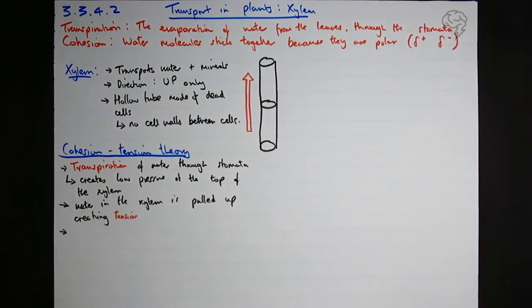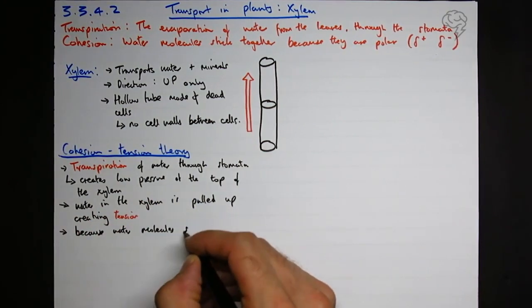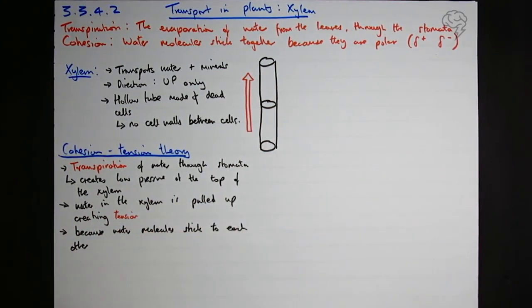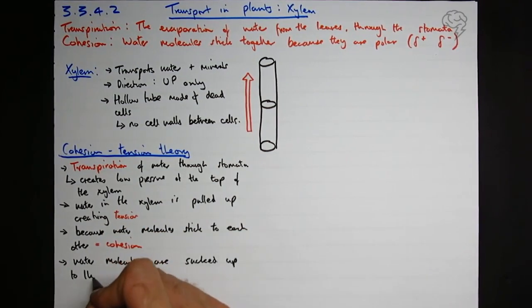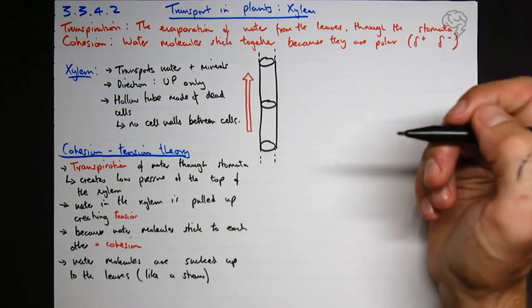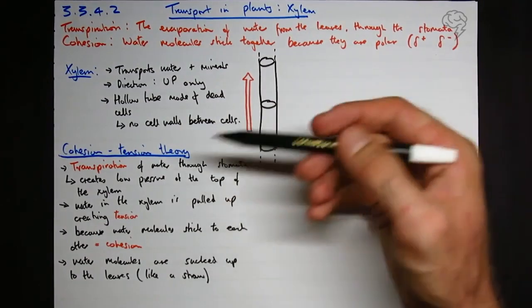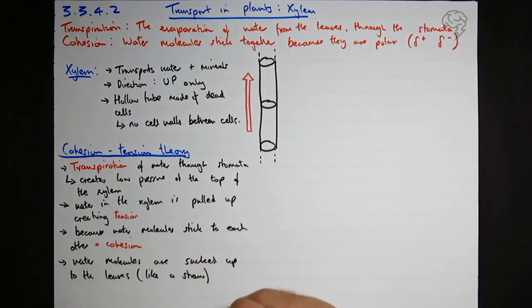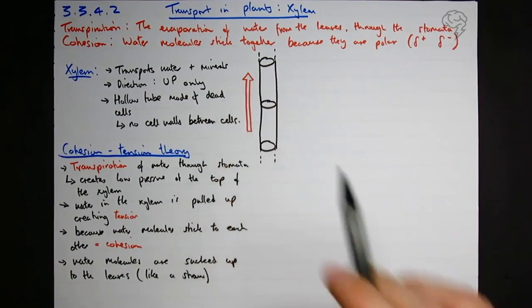If this was another liquid, and it wasn't water, water that wasn't cohesive, this probably wouldn't work. The column of water would break. The strength of bonds between the molecules wouldn't be enough to support their own weight. But water is so sticky, it sticks to each other, and it can support its own weight in a column. So basically, water is just sucked up to the water molecules, just like a straw. You create low pressure at the top by sucking, or by the transpiration taking place through the stomata. It creates a pull on the top, and because the water molecules are cohesive, there's cohesion. So this is the cohesion tension theory of how water gets to the top of the xylem. And remember, it's up only.